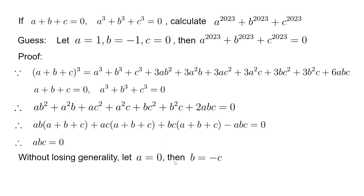Now this is enough and we can just plug that into the target expression. So it can be simplified to b²⁰²³ plus (-b)²⁰²³. Because 2023 is an odd number, we can just take the minus sign out, and this becomes b²⁰²³ minus b²⁰²³, which equals zero.